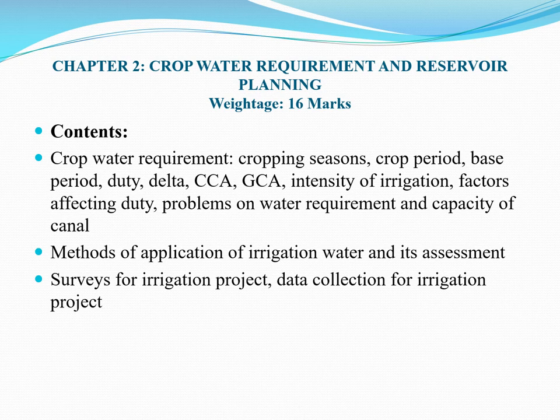Hello friends, now we are discussing Chapter 2: Crop Water Requirement and Reservoir Planning. The weightage given to this chapter is 16 marks. The syllabus includes cropping seasons, crop period, base period, duty, delta, CCA (Culturable Command Area), and GCA (Gross Command Area), as well as intensity of irrigation, factors affecting duty, and problems on water requirement and capacity of canal.